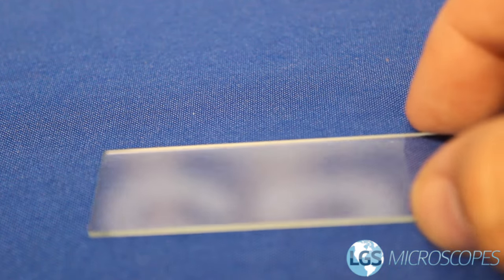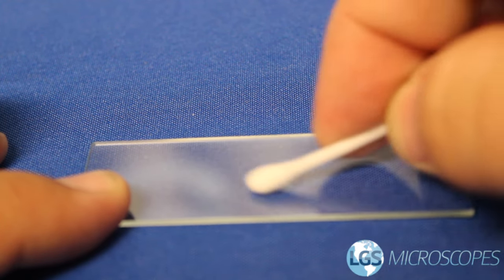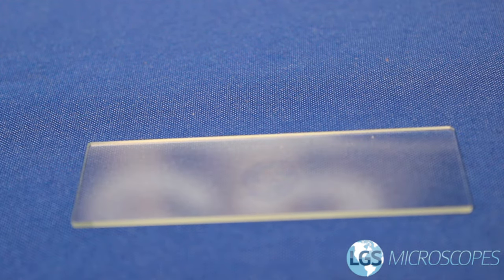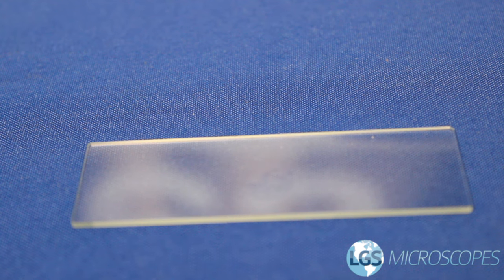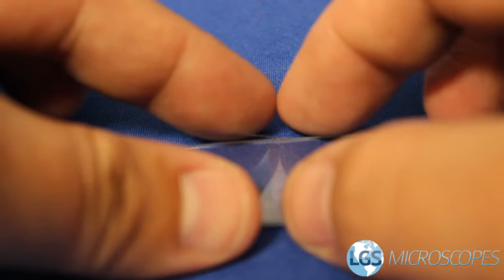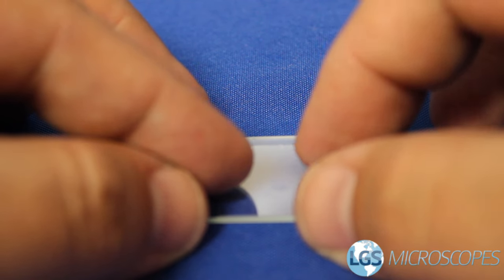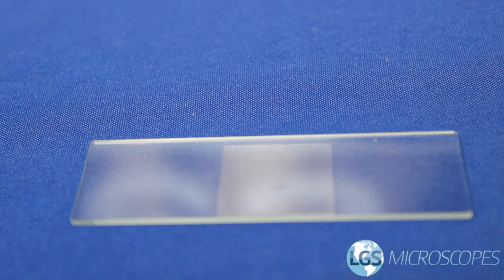When you're preparing your slide you're going to need your slide, whatever your sample is, and then a very important part if you're going to use immersion oil is you need to use a cover slip and just place that right over. This is so that you don't get any stain or any of your sample onto the objective lenses.